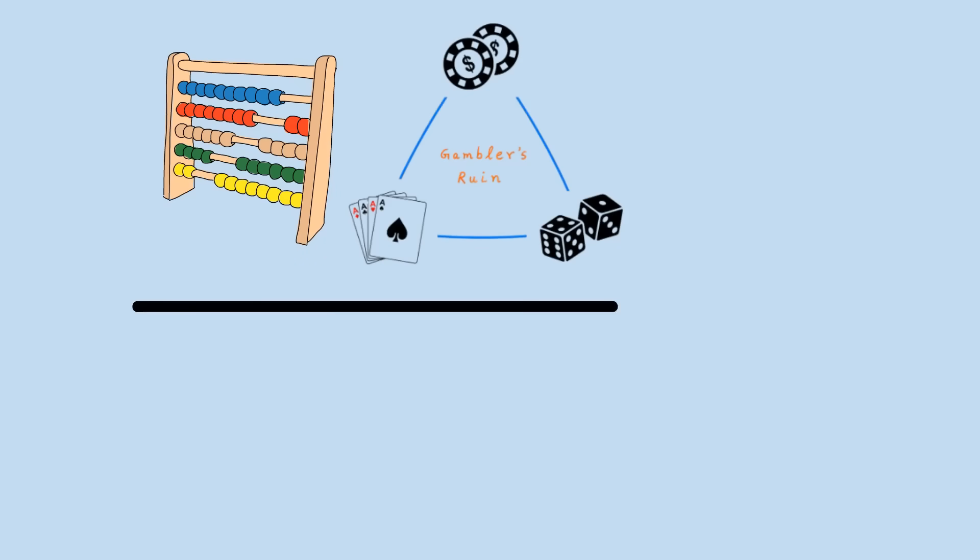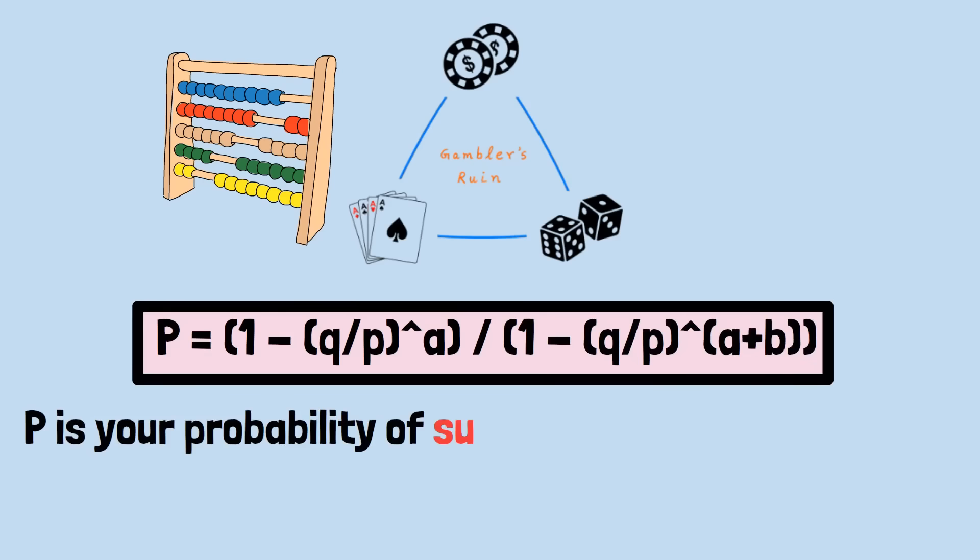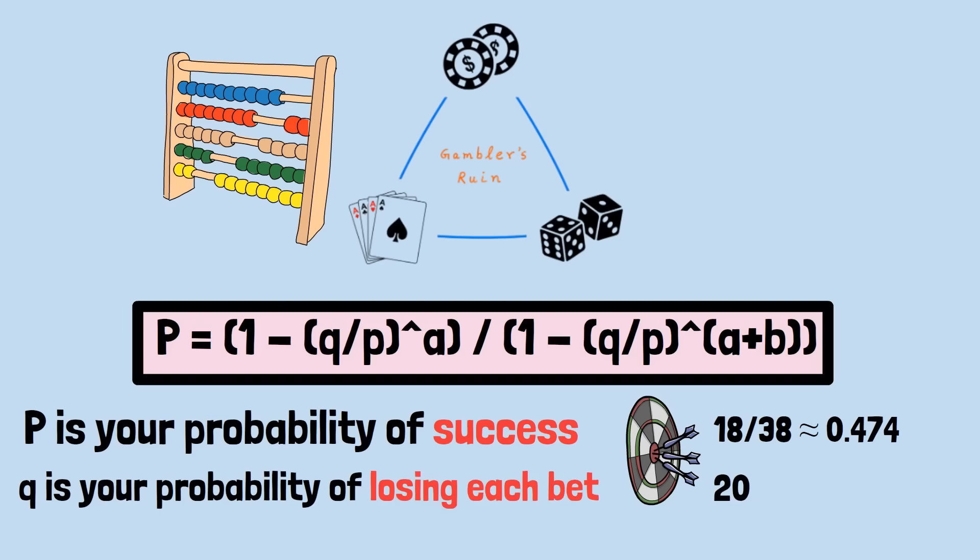This counterintuitive result emerges from a specific mathematical formula that governs what's called the gambler's ruin problem. The equation that determines your probability of reaching a profit goal before going broke is P equals 1 minus Q over P raised to the power of A, all divided by 1 minus Q over P raised to the power A plus B. Where P is your probability of winning each bet (18 over 38, approximately 0.474 for red in roulette), Q is your probability of losing each bet (20 over 38, approximately 0.526), A is your starting bankroll in betting units, and B is your profit goal in betting units.